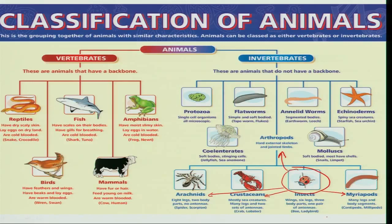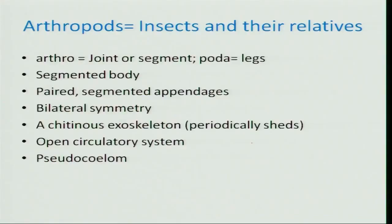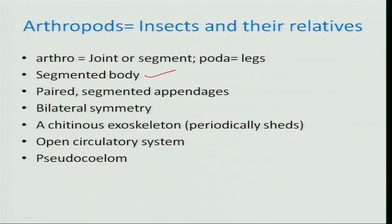All four sister groups, along with insects, share certain common characters that are characteristic of arthropods. The word 'arthropod' can be divided into 'arthro' meaning jointed and 'poda' meaning appendages or legs. All these groups have a jointed or segmented body with paired and segmented appendages. These appendages are bilaterally symmetrical, and arthropods have an exocuticle — a special cuticular structure made up of chitin that is periodically shed. They have an open circulatory system, unlike higher animals which have a closed circulatory system, and the body cavity is not a true coelom.